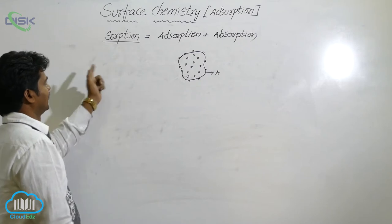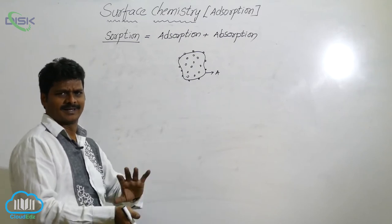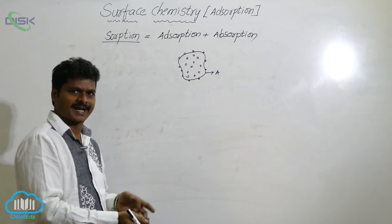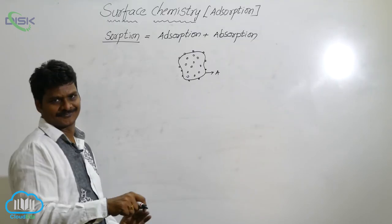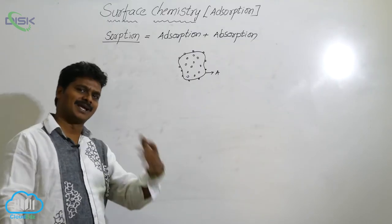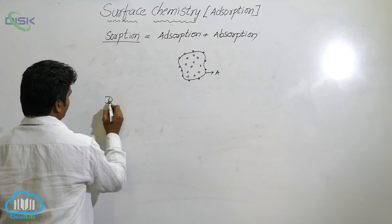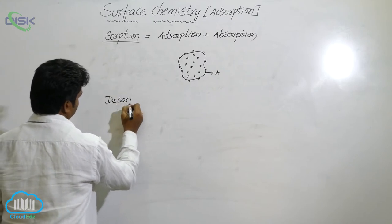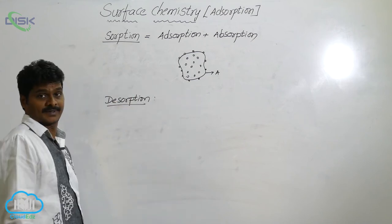This is sorption. Generally, examples of sorption include a sponge placed in water — there occurs adsorption also, not only absorption. Water molecules are gathered on the surface as well, so a sponge placed in water is an example of sorption.